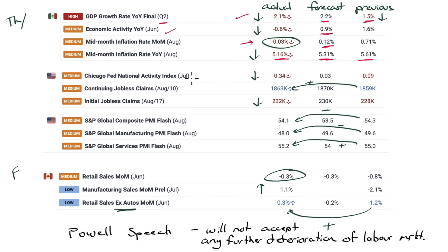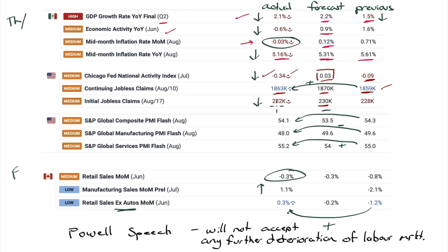Chicago Fed national activity index for the U.S. on Thursday: negative 0.34 — the expectation was for a positive 0.03, the previous was negative 0.09. So more acceleration to the downside. Continuing jobless claims: last read was 1,859, up to 1,863 — expectation was for 1,870, less than expected, but still a week-over-week gain. Initial jobless claims: expectation was 230, came in at 232 — the previous week was 228. So that is higher initial jobless claims than both last week and the expectation.